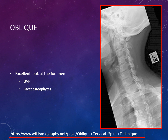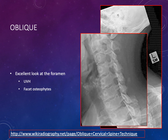The real winner among these views is the oblique view. A left oblique view lets you look at the right foramen, and a right oblique view lets you look at the left foramen. These views help assess the uncovertebral joints and foramina. You can see uncovertebral spurring at the inferior aspect of the foramina, and facet arthrosis posteriorly. When both are present, there is deformation of the foramen, making this a great way to identify bony foraminal stenosis.